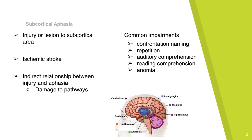Subcortical aphasia is a result of an injury or lesion to one of the subcortical areas. These areas can include the basal ganglia, the thalamus, and the internal capsule, which are white matter pathways. Subcortical aphasia is typically due to an ischemic stroke, which is when a blood clot blocks flow to an area of the brain. It was previously believed that the injury directly resulted in aphasia; however, it is now believed that there is an indirect relationship.